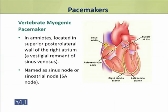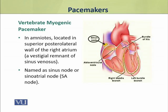Jabke jo amnioids hain, that is birds, reptiles, aur mammals, in mein yeh jo pacemaker hai, yeh superior posterior lateral wall of the right atrium mein maujood hota hai. Chunke amnioids mein sinus venosus ek chamber ke taur par exist nahi karta, balke uska ek vestigial remnant maujood hai, jo ke is superior posterior lateral wall of right atrium wali jagah par hai. Lehaza yeh pacemaker isi jagah ke upar waqa hota hai. This pacemaker is known as the sinus node or sinoatrial SA node.